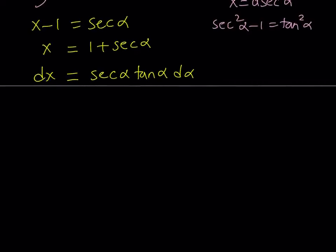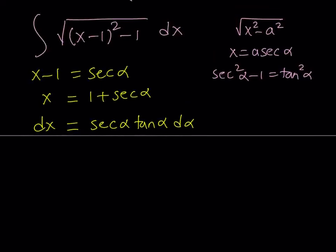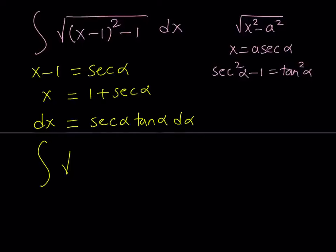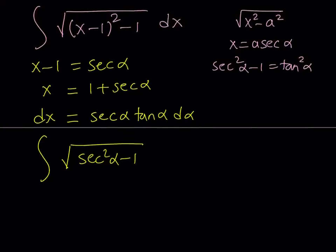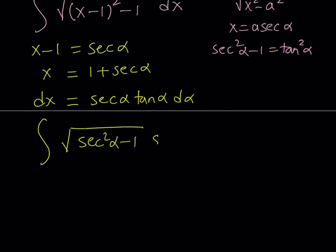Now let's go ahead and make the replacements inside the radical. x minus 1 is going to be replaced with secant, so it's going to be secant squared alpha minus 1. And outside we're going to have dx, which is secant alpha tangent alpha d alpha — all as a product.